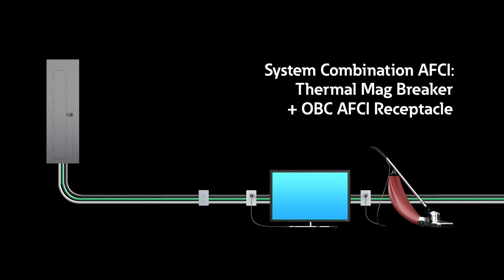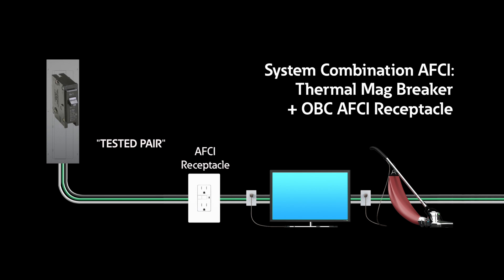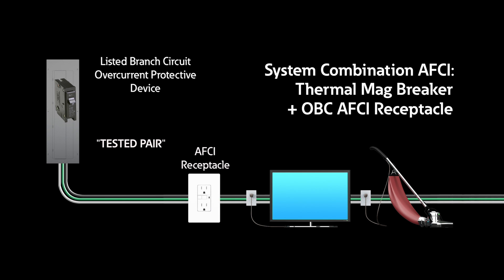System combination AFCI thermal mag breaker with an OBC AFCI receptacle. This is a listed, tested pair that includes an OBC AFCI receptacle installed at the first outlet on the branch circuit in combination with a listed branch circuit overcurrent protective device installed at the panel. While this installation allows for local reset capabilities, tested and listed combinations of AFCI receptacles and upstream branch breakers are not currently available. Additionally, there are limitations in the home run length.